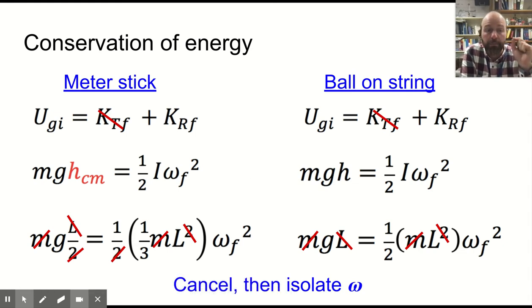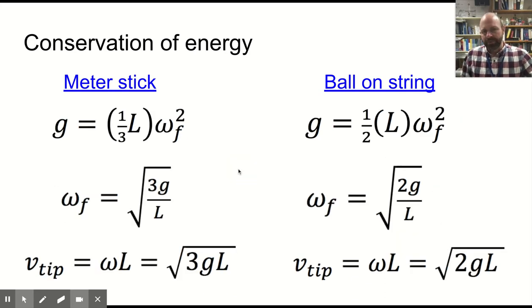And then for the ball, it's basically a point particle going around in a circle, so it's just ML squared. The M's cancel out. One of the L's cancels out with both of them. You can isolate omega. And we end up with omega for the meter stick at the end is root 3g over L. For the ball on a string, it's root 2g over L.